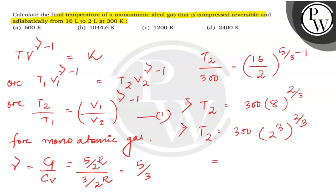It will be equal to 300 into 2 to the power 2 that would be equal to 1200 Kelvin. The answer is option C. Thank you.